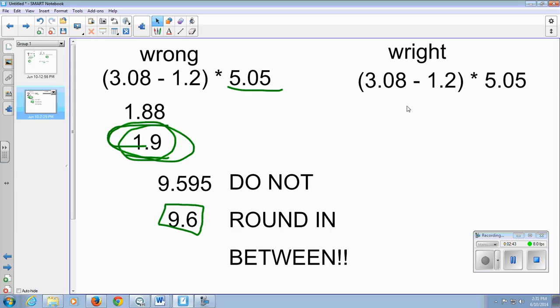So here's the right way to do this. So 3.08 minus 1.2 is going to give you an answer of 1.88. Take that number. We know that our precision level is 2. So we're only precise to the tenths place. Well, that gives us 2 significant digits.